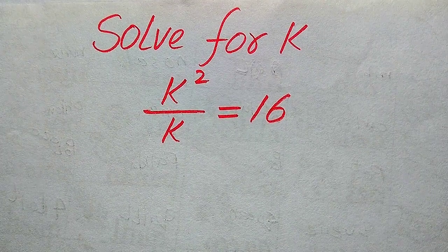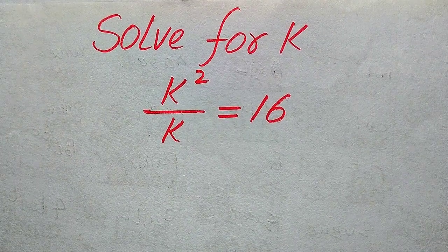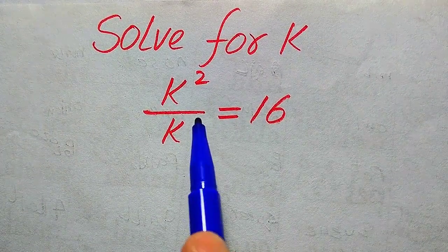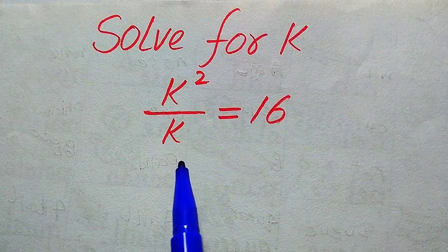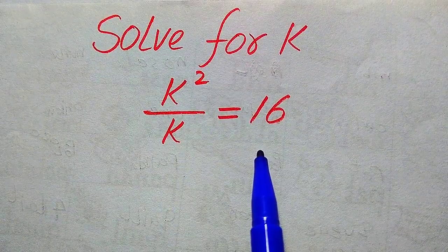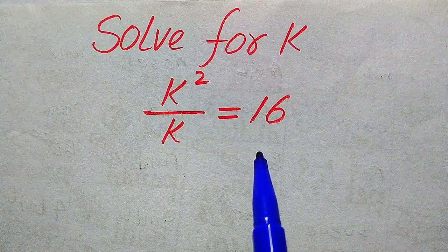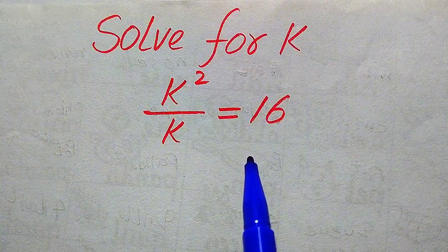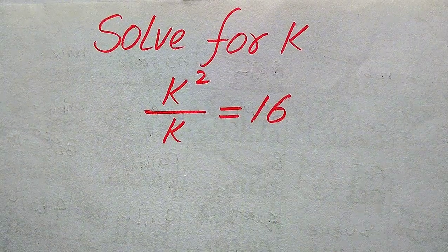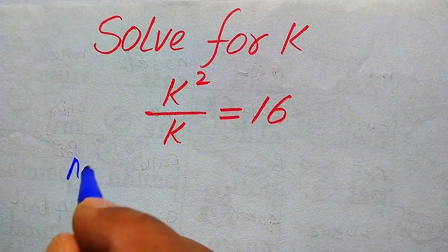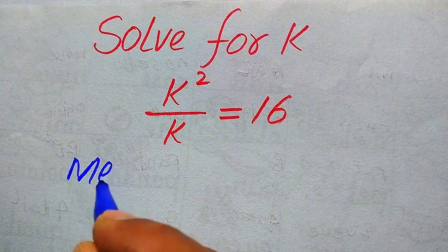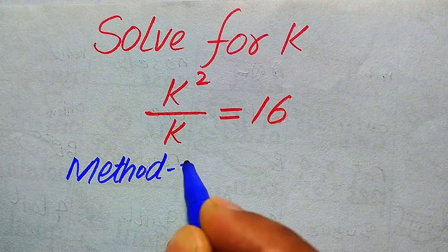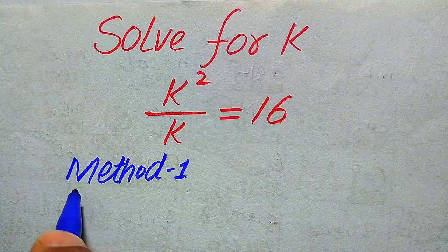Hello everyone, welcome! We will solve this nice math olympiad algebra problem. We have k squared divided by k equals 16, and we will solve this problem for all the values of k. We move toward the solution using the first method.